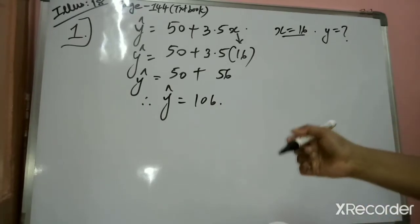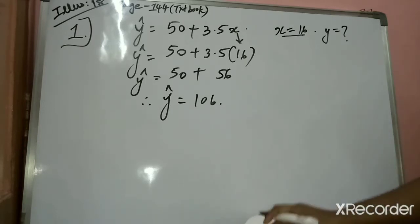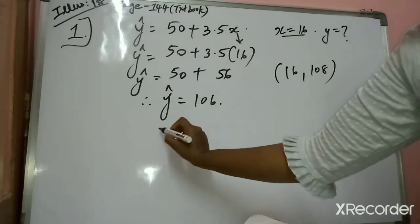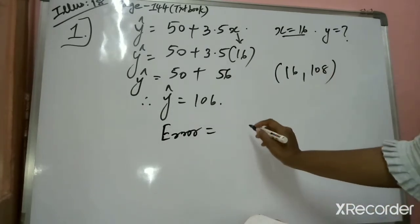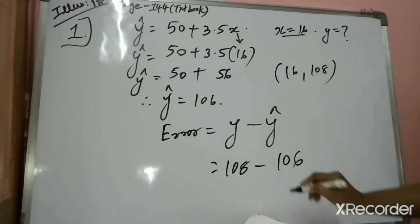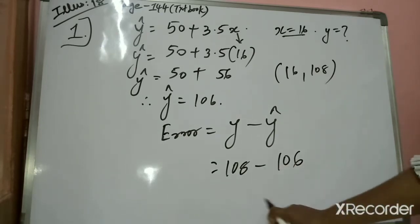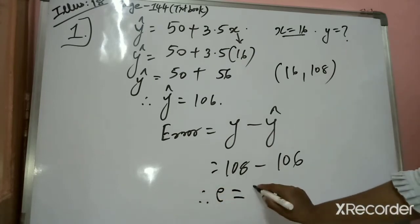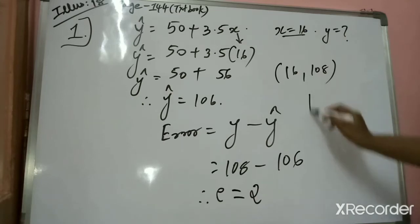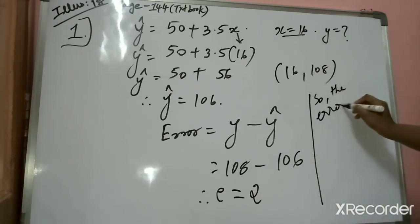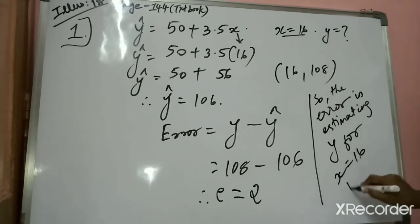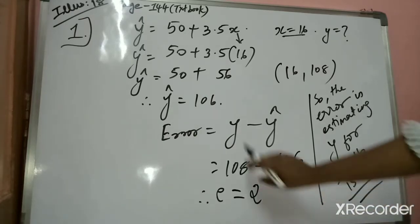When X equals 16, the corresponding observed Y is 108. The error formula is: error equals Y minus Y cap. So error equals 108 minus 106, which is 2. Therefore, the error in estimating Y for X equals 16 is 2. You can write it in statement form: the error in estimating Y for X equals 16 is 2. This completes the first part.